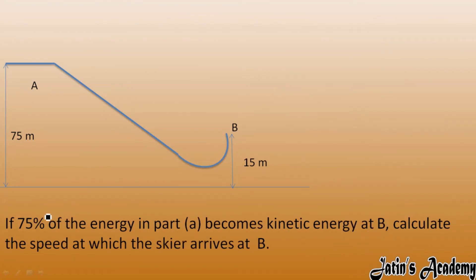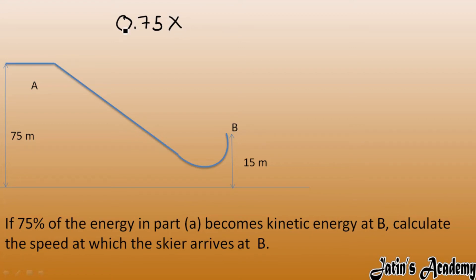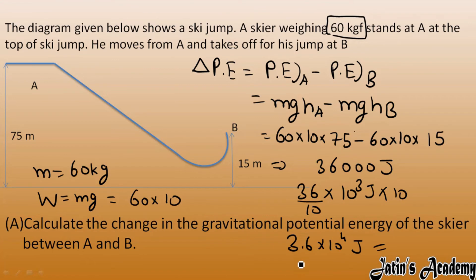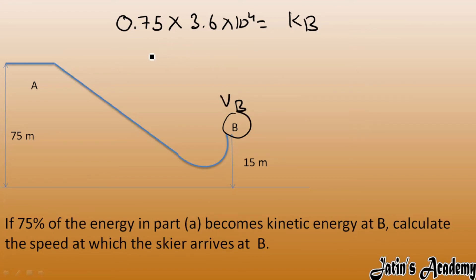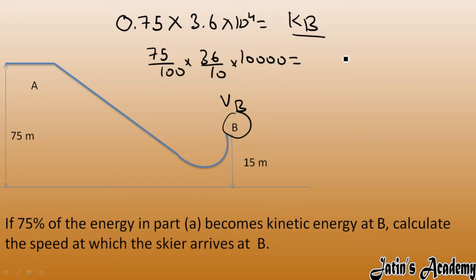Next, if 75% of the energy calculated in part A becomes kinetic energy at point B, we calculate the speed at which the skier arrives at B. So 0.75 times 3.6 into 10 to the power 4 Joules equals the kinetic energy at point B, which is half M VB squared. That gives us 75 over 100 times 36 over 10 times 10 to the power 4 equals half times 60 times VB squared.